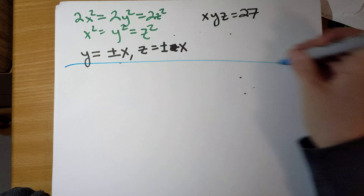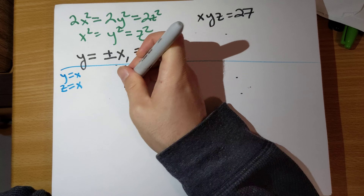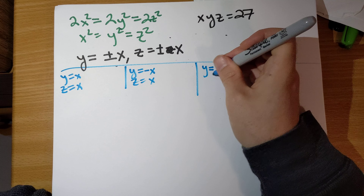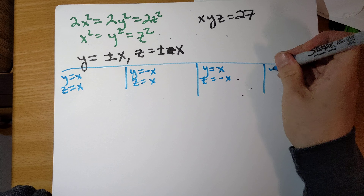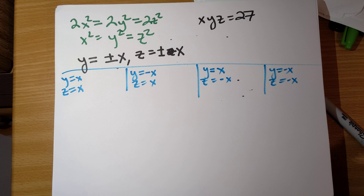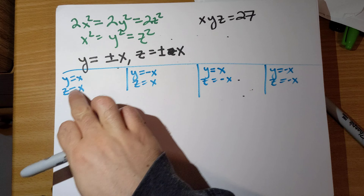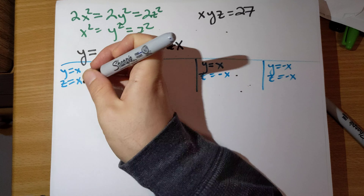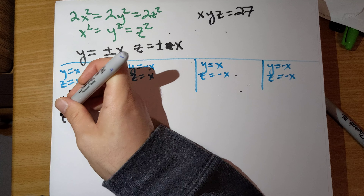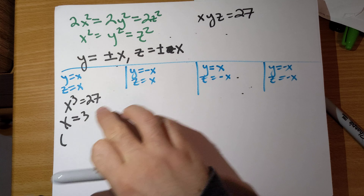Now let's try to eliminate the lambda variable. The preferred way is to multiply each equation by something to make the right sides all equal to each other. Multiply the first equation by x to get λxyz, multiply the second equation by y to get λxyz, and multiply the third equation by z. So we get: 2x² = λxyz, 2y² = λxyz, and 2z² = λxyz.